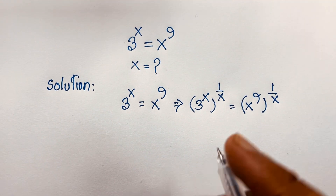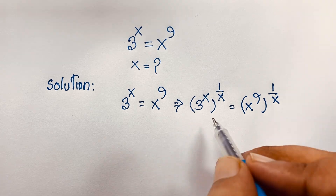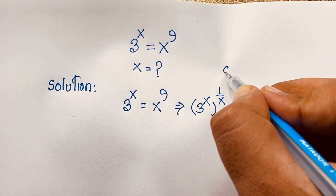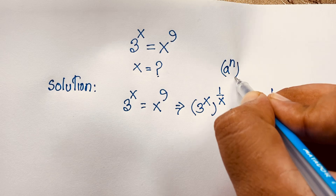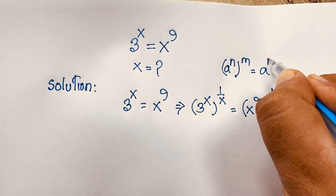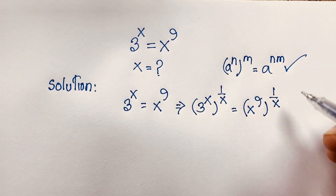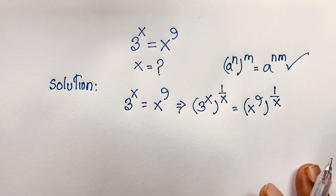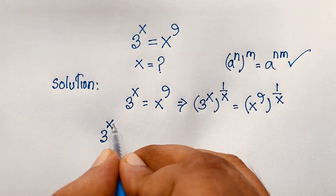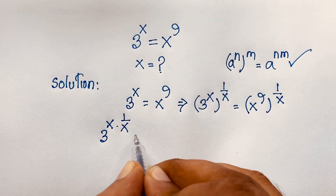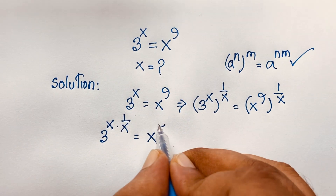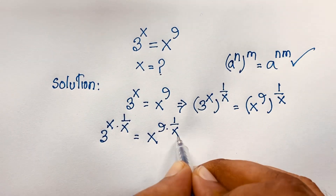Now I apply this math formula: a to the power n, bracket to the power m, equals a to the power n times m. Applying this formula here, it becomes 3 to the power x times 1 over x, is equal to x to the power 9 times 1 over x.